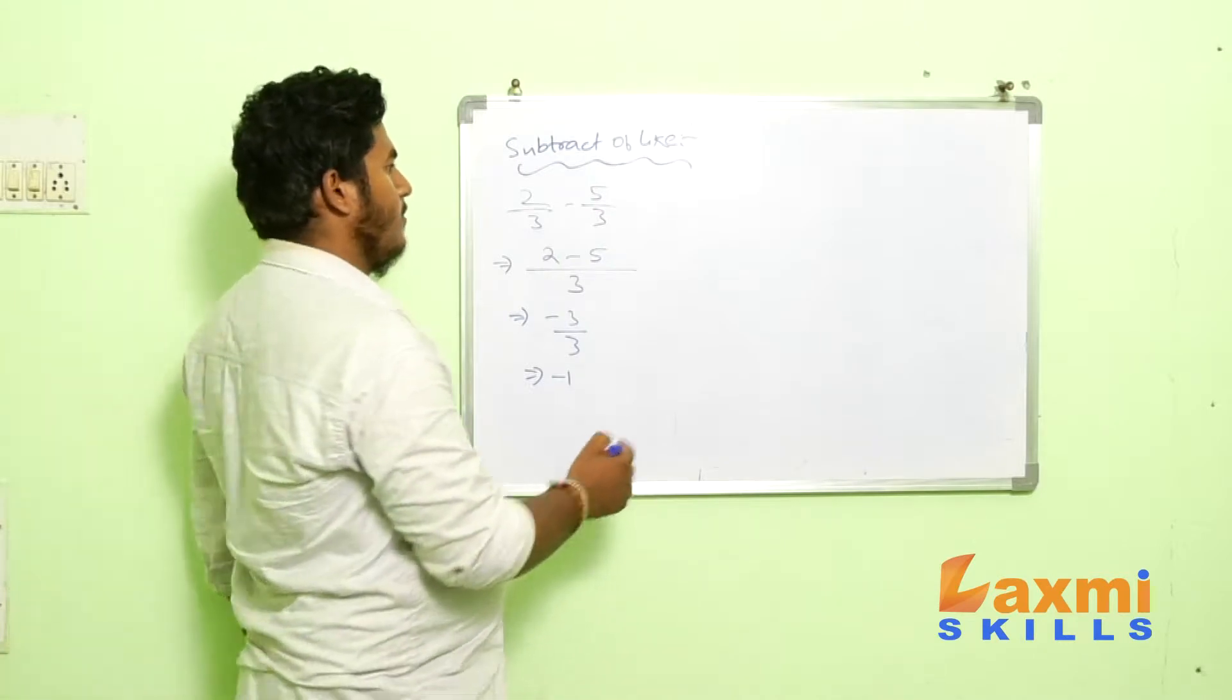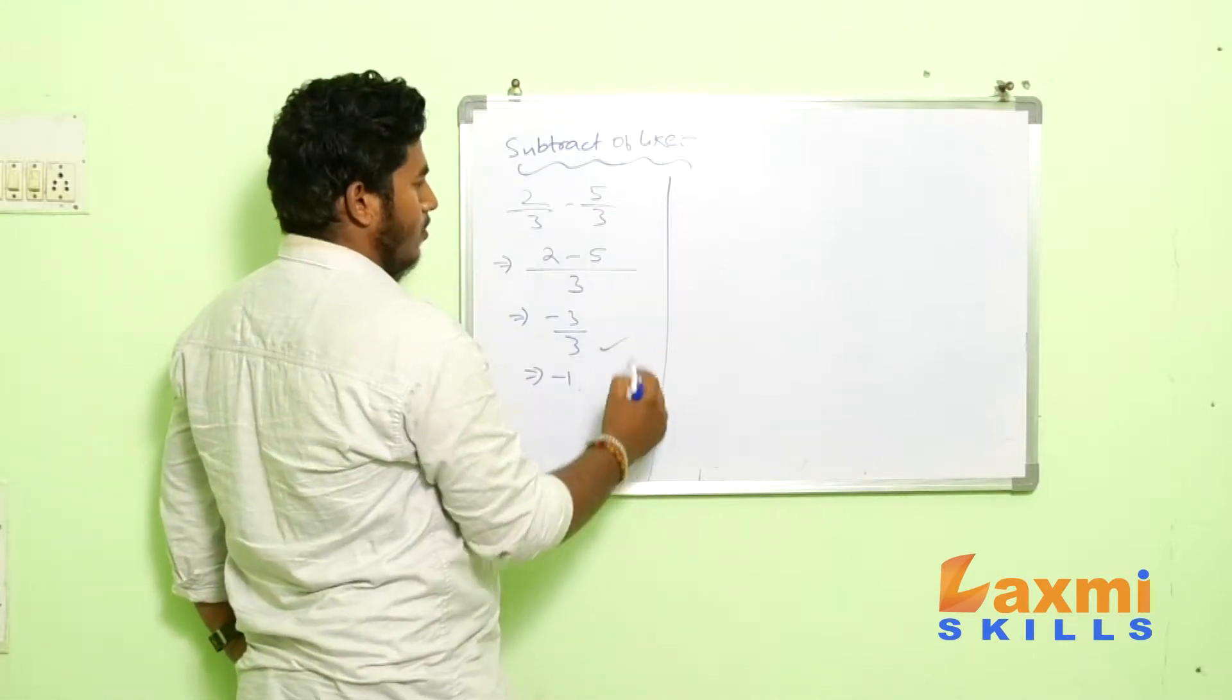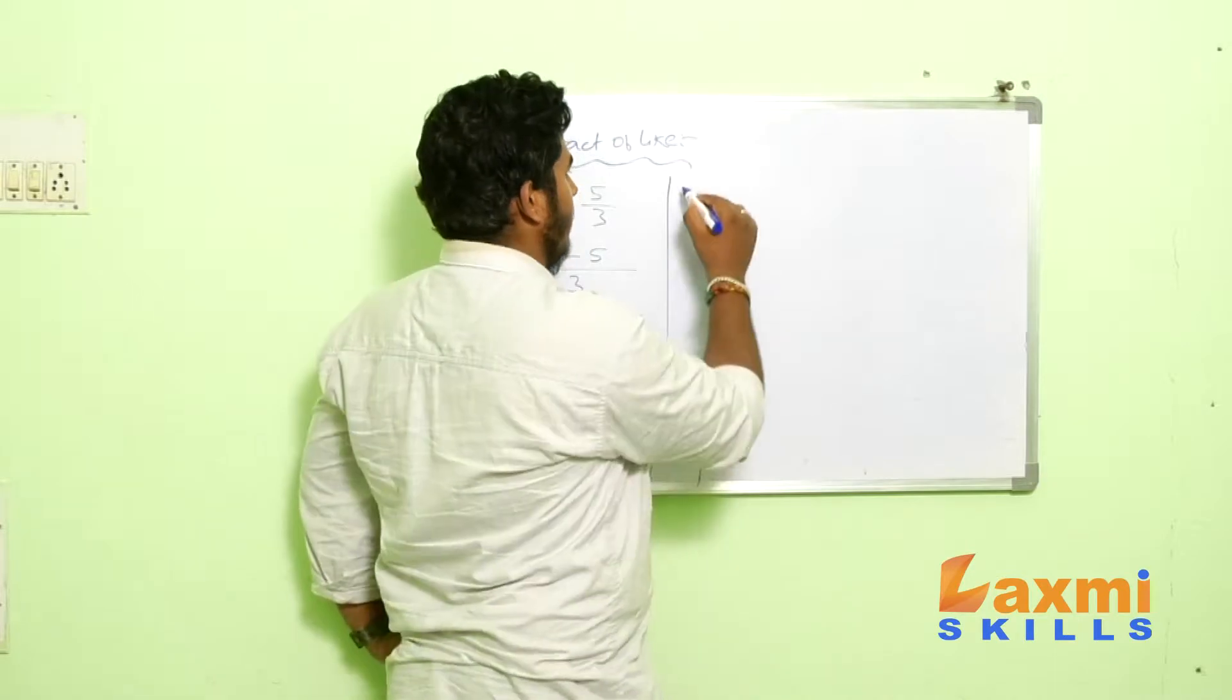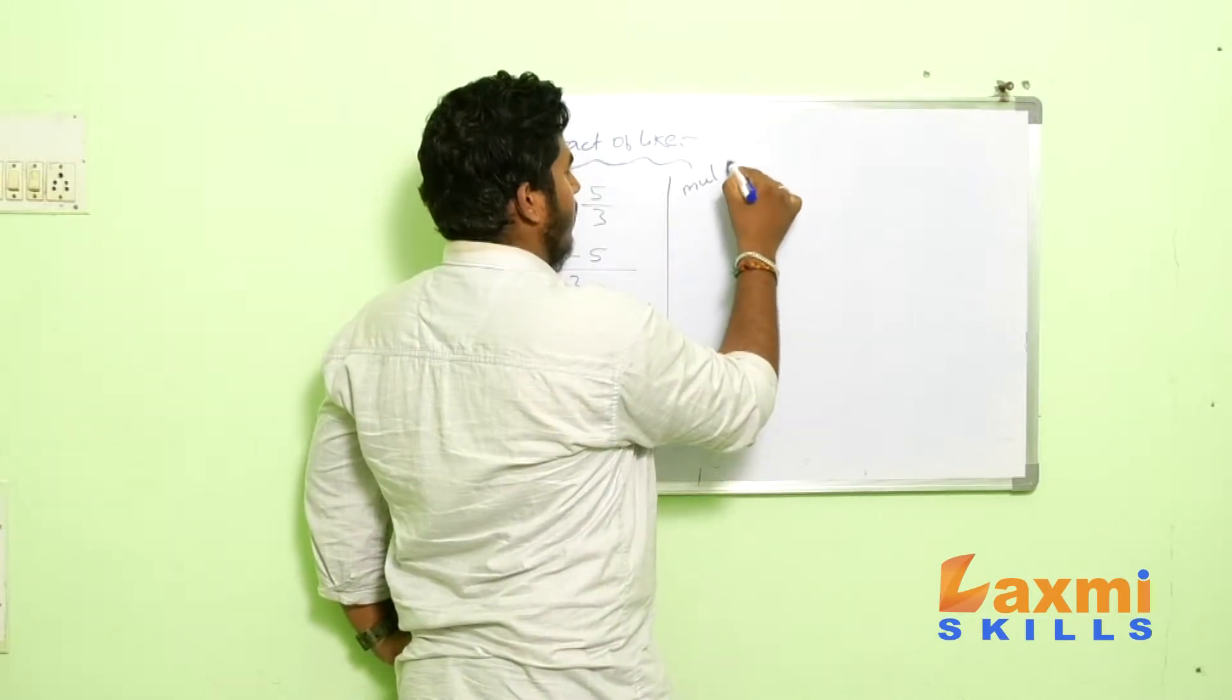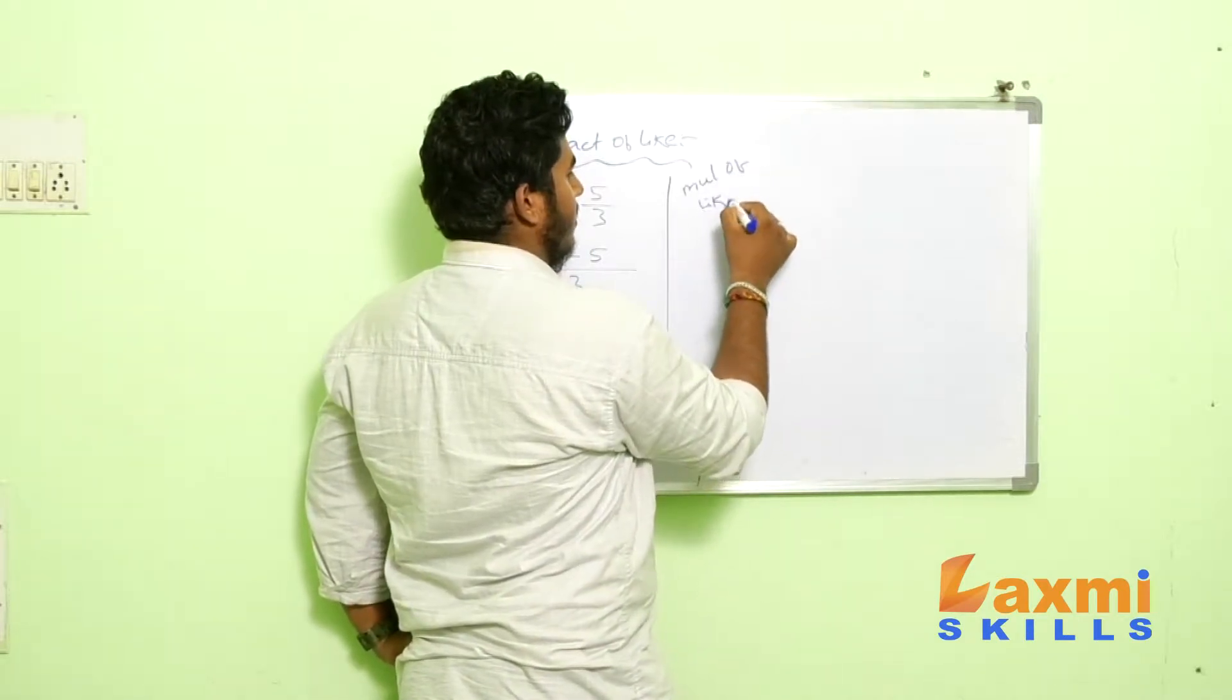So, just subtraction of like terms will be quite easy. You can go through this. And let me start the multiplication. So, this is multiplication of like.